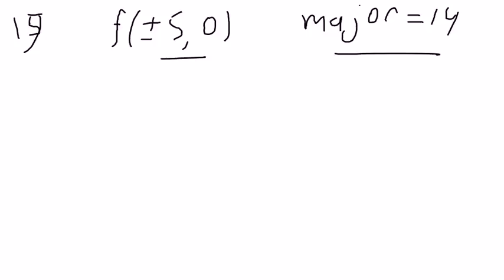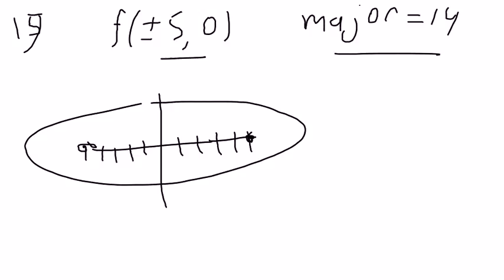Alright, so what do we do? Well, I'm going to graph what I have so far. The foci are out here at 5 and negative 5, so that means I'm oriented this way.